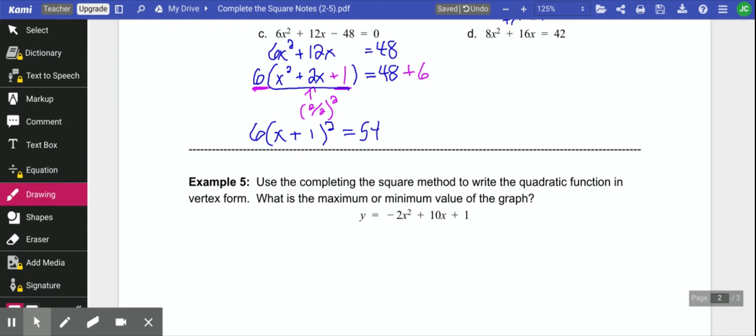Don't take the square root yet. Now we need to divide by that 6 so we can get it out of there. I'm going to continue the problem up here. So we have x plus 1 squared equals 9.